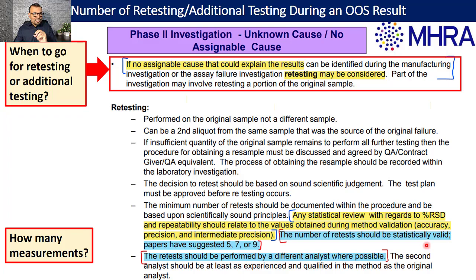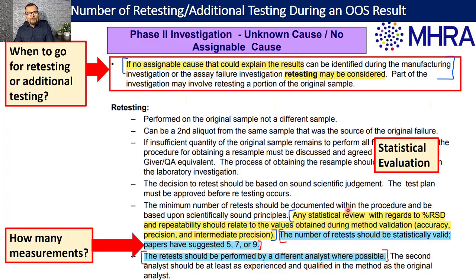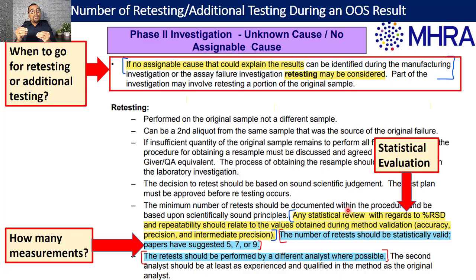The third important point concerns statistical evaluation — how one can define that results are not statistically different from one another. The percent RSD can be calculated, and your validation document can serve as the reference for defining the acceptance criteria for percent RSD.